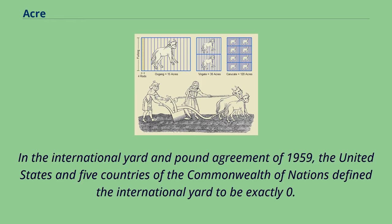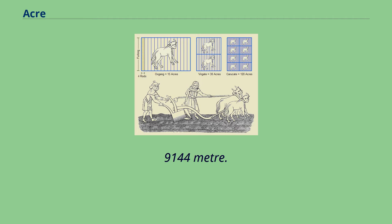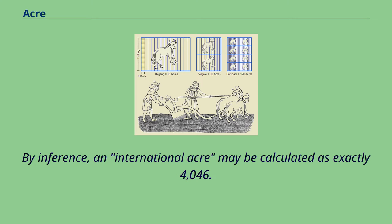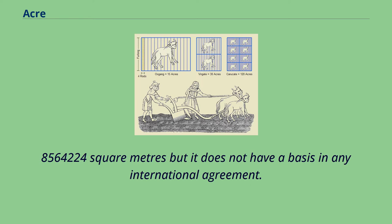In the International Yard and Pound Agreement of 1959, the United States and five countries of the Commonwealth of Nations defined the International Yard to be exactly 0.9144 meters. The U.S. authorities decided that, while the refined definition would apply nationally in all other respects, the U.S. survey foot would continue until such a time as it becomes desirable and expedient to readjust it. By inference, an international acre may be calculated as exactly 4,046.8564224 square meters, but it does not have a basis in any international agreement.